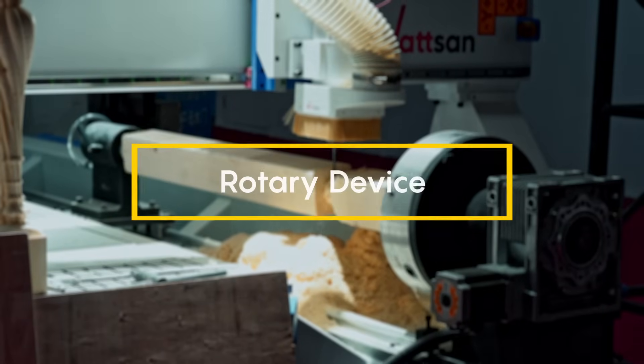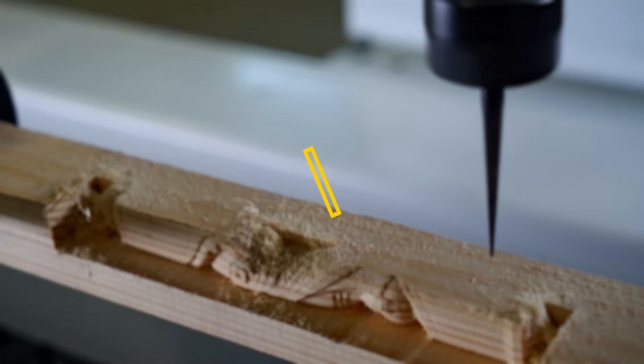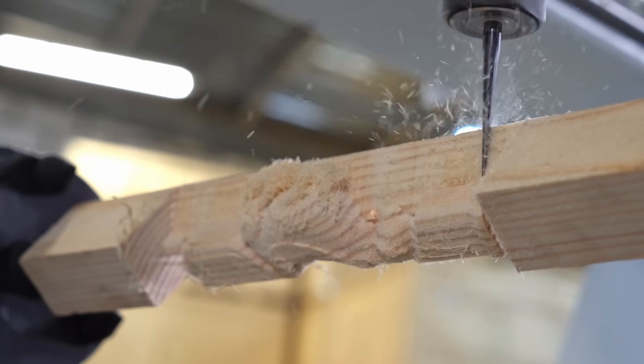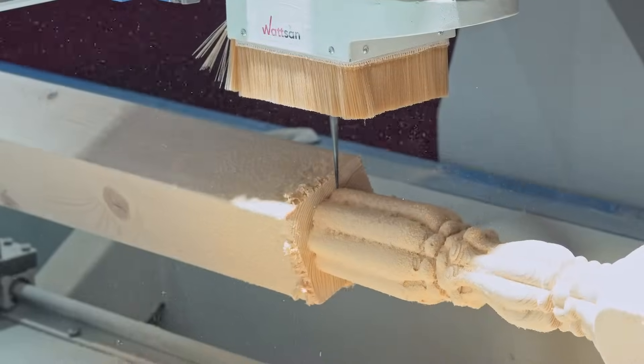A rotary device. With a rotary device it is possible to produce furniture legs, decorative columns, balusters, chess pieces and souvenirs.